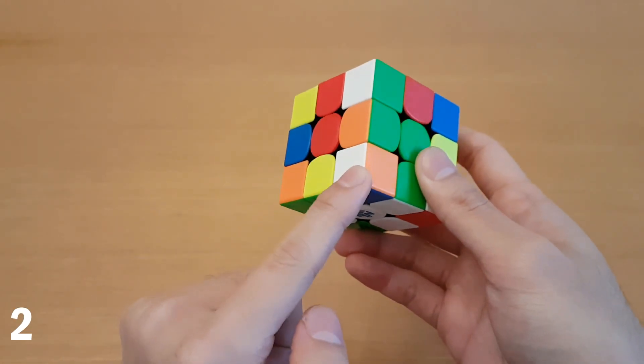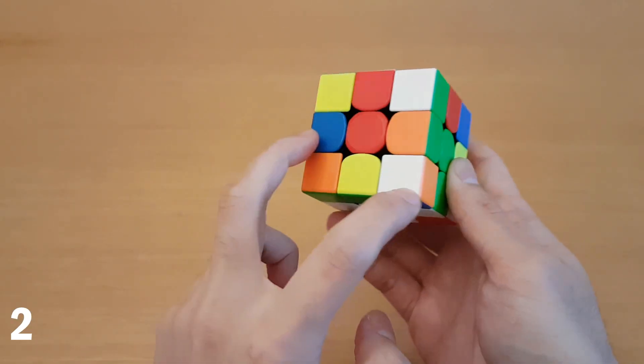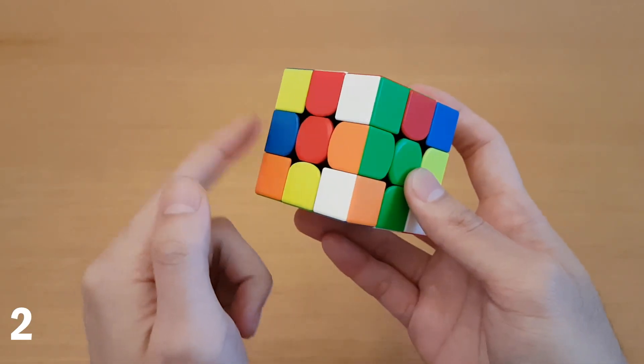And here I have the same idea, but this time the edge is in the same layer. Now it also works when it's separated from the corner. All you have to do is make sure it gets to the right spot.